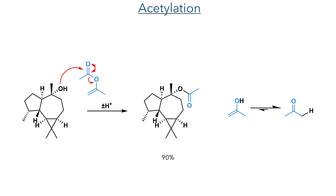The newly formed alcohol was then protected using isopropenyl acetate and catalytic PTSA. The reaction is driven forward by the elimination of an enol that tautomerises to form acetone.